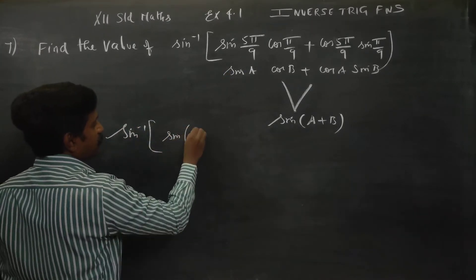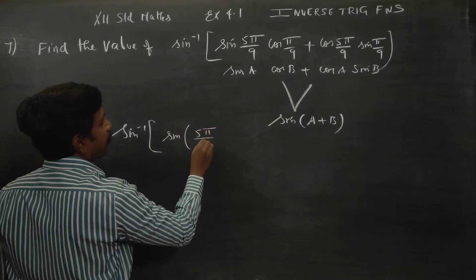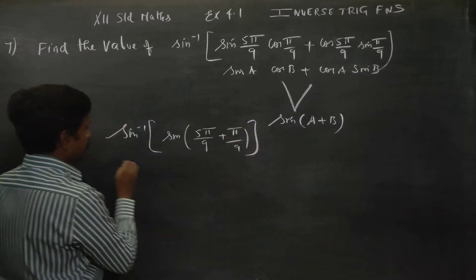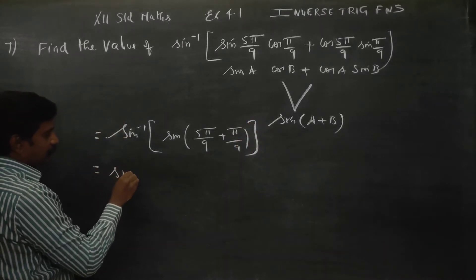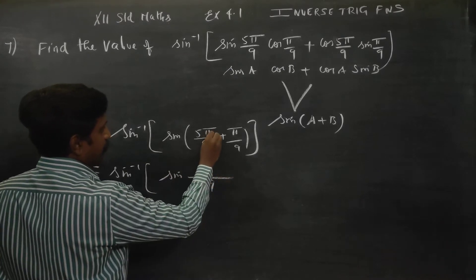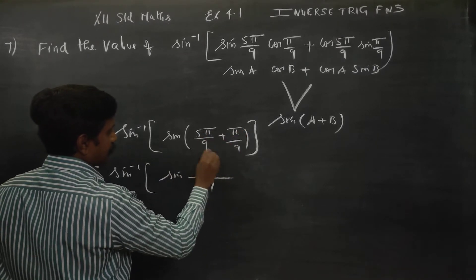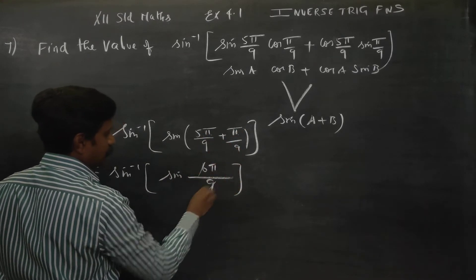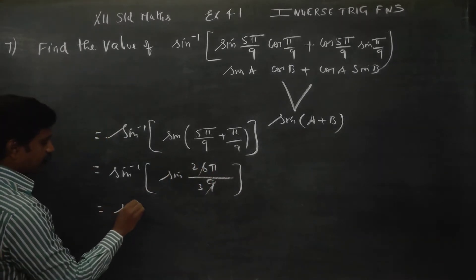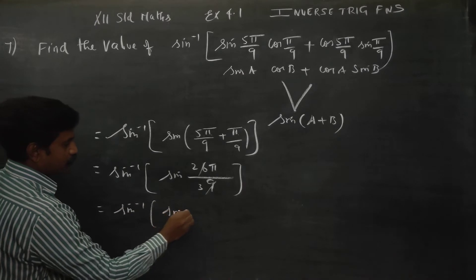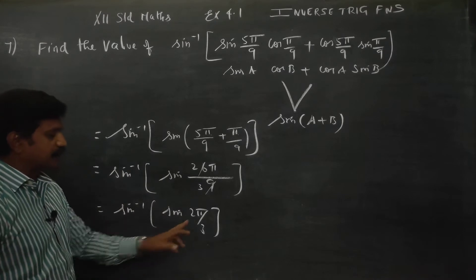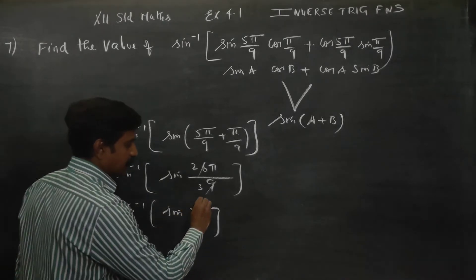Here, a plus b equals 5π/9 plus π/9. Taking LCM, 5π plus π is 6π, divided by 9, giving us 6π/9. So we get sin inverse of sin(2π/3).